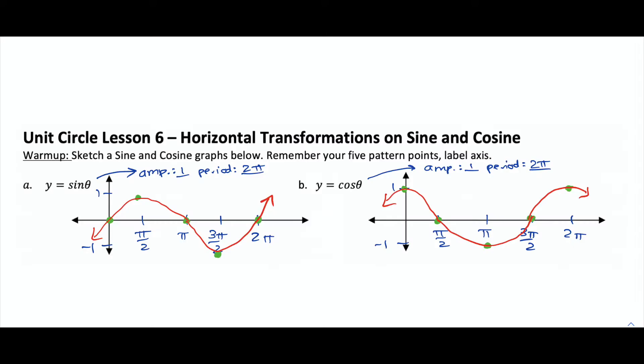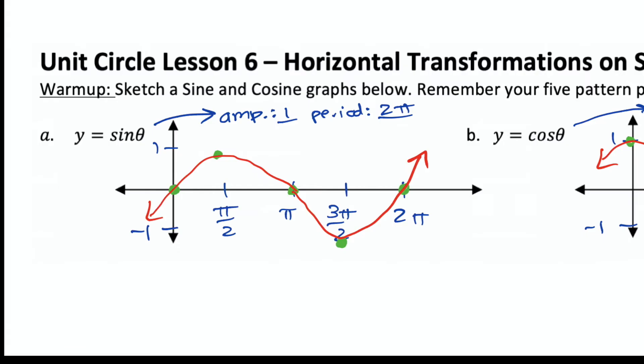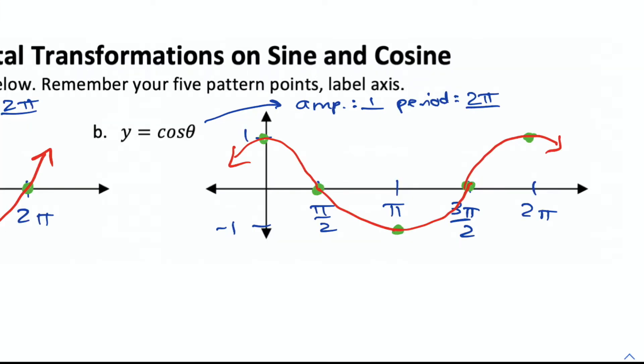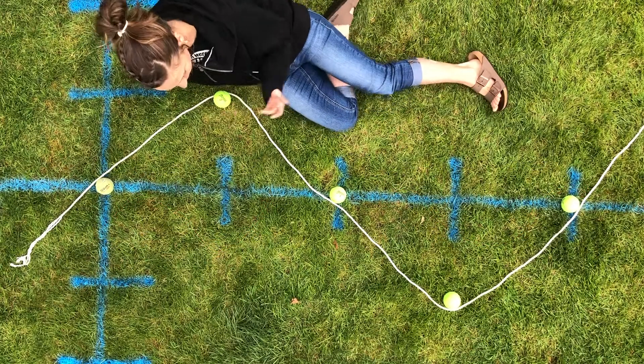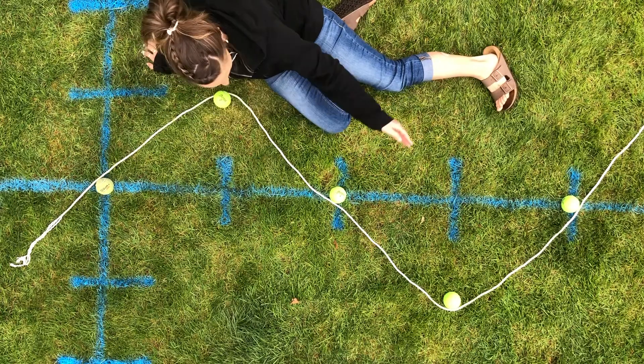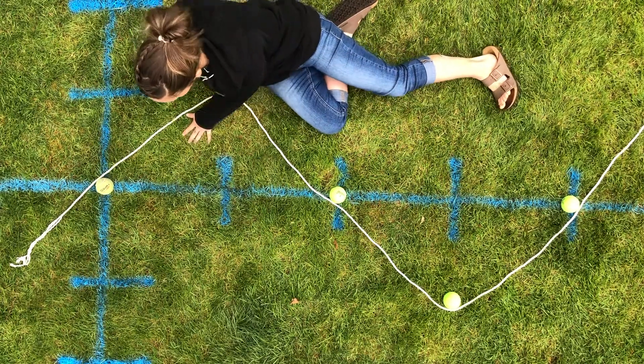Okay, so let's check your warm-up. You wanted to graph y equals sine theta and y equals cosine theta. These are just the parent functions, so the amplitude is 1 and the period is the typical 2 pi. We need to identify those so we can label our axes. Once we have our axes labeled, we're ready to graph our pattern points. We'll go over sine and cosine in the next video. Okay, Wilson, let's review.